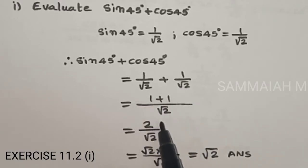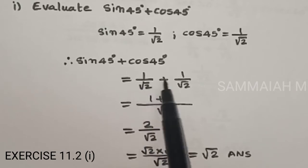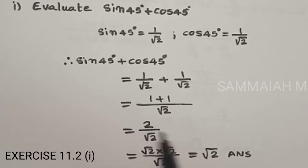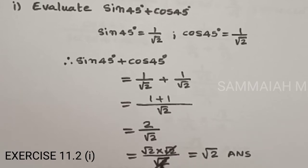Denominators are equal so LCM is root 2, numerator is 1 plus 1, giving 2 by root 2. Now 2 is written as root 2 into root 2; root 2 and root 2 cancel, so the answer is root 2.